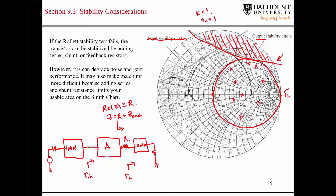We won't get into all of the different methods right now — we'll see them in practice later on. Besides adding a series resistor, you can also add a shunt resistor, which corresponds to a circle of constant admittance. Another technique is adding some kind of feedback resistor. The problem with stabilizing using these techniques is that it tends to degrade noise and gain performance of the system, which can be problematic and has to be monitored. We'll see the impact that these techniques have on those parameters.